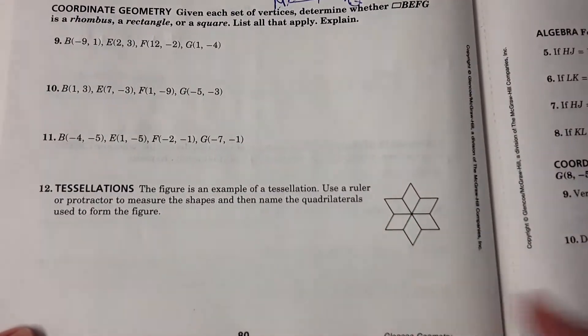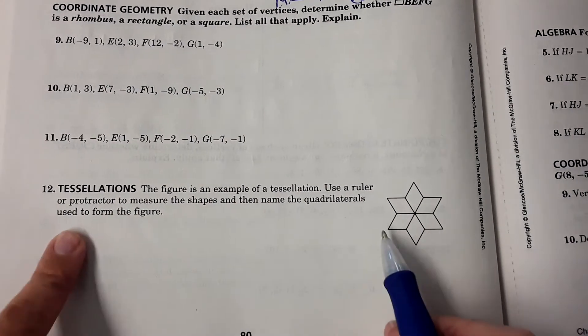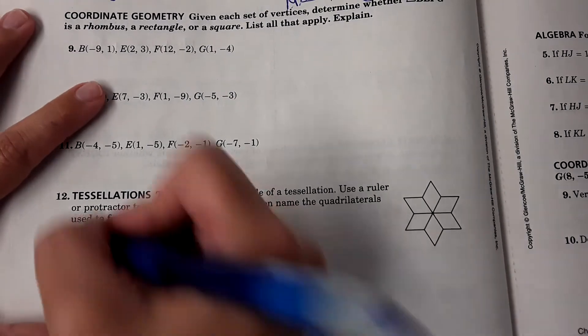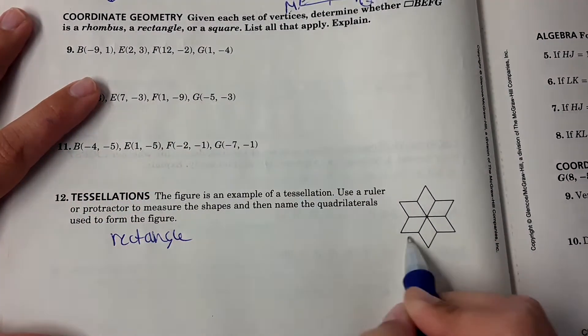And then tessellations. This one's on the homework as well. The figure is an example of a tessellation. Use a ruler or protractor to measure the shape and then name the quadrilaterals used to form the figure. Well, at this point, it can either be a rectangle. Are those rectangles? No.